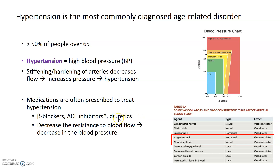Diuretics are drugs associated with increased urination — they make you urinate more. The reason for that is because they prevent the action of antidiuretic hormone and allow water to move from your blood into your urine in the kidneys. This results in increased urine production and a decrease in blood volume. That decrease in blood volume reduces resistance to blood flow and leads to a decrease in blood pressure.